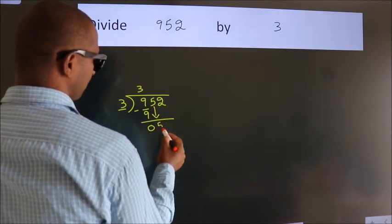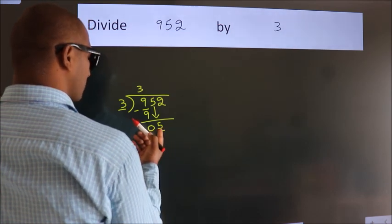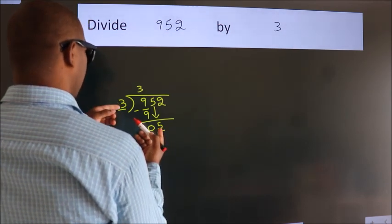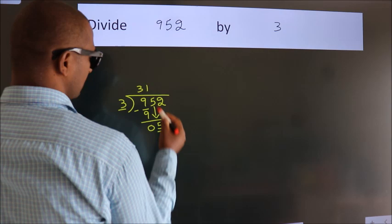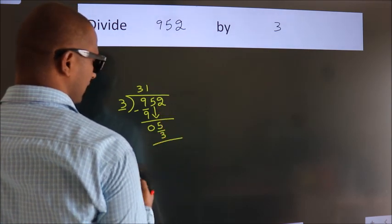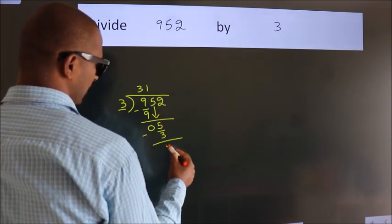So, 5 down. So, 5. A number close to 5 in 3 table is 3 1s 3. Now, we subtract. We get 2.